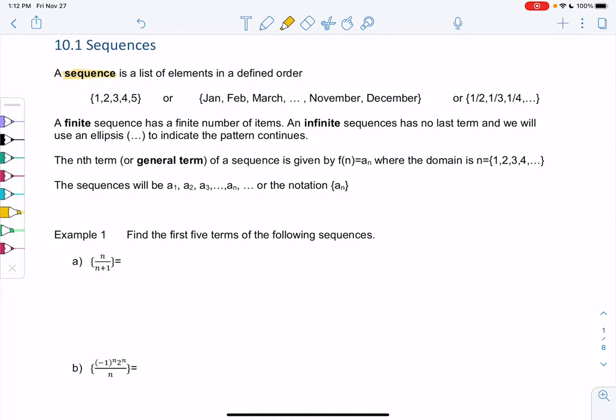It doesn't have to be numbers. Listing out months—January, February, March through December—would be a sequence. Or it could be fractions: 1 half, 1 third, 1 fourth. And then I'll talk about these three little dots in a second.